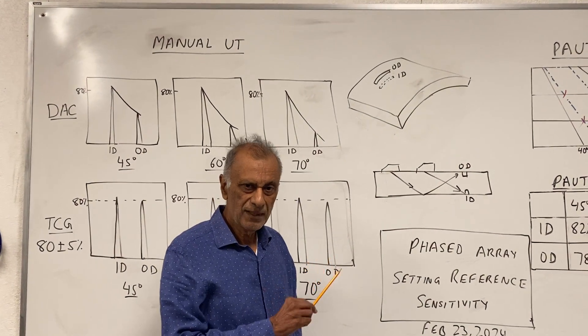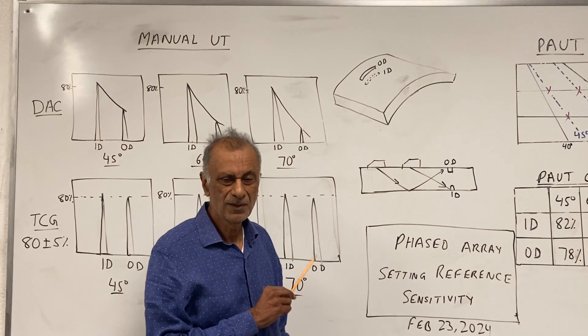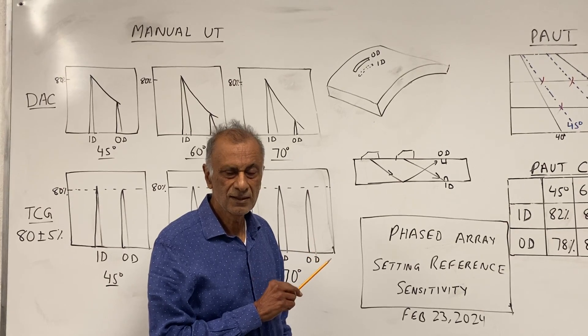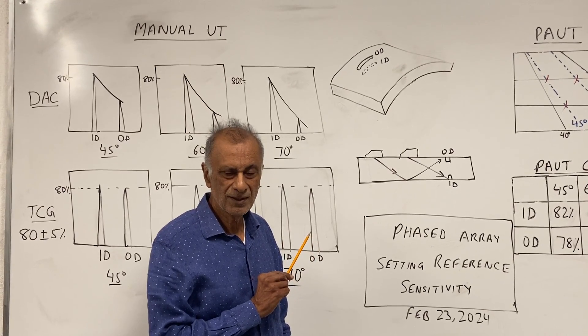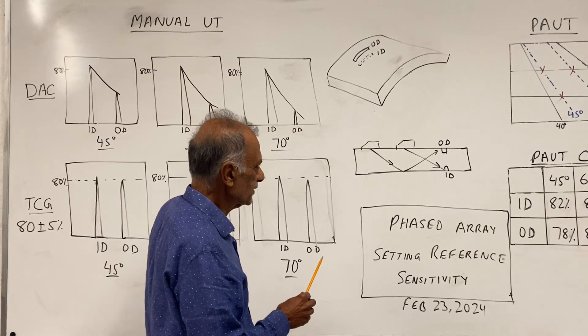When you're doing piping inspection, you have to set up the reference level on the ID and OD notches to meet the ASME Section 5 requirements. So let's go and do this now.